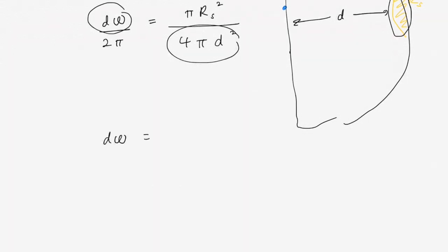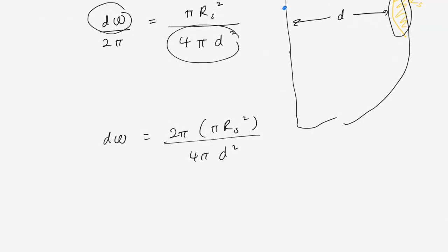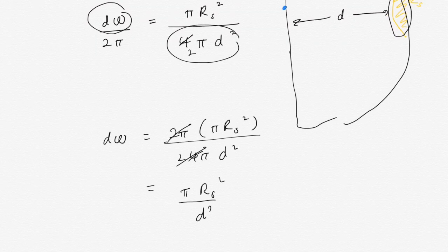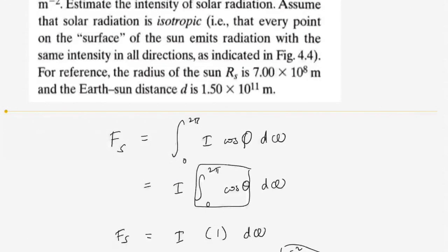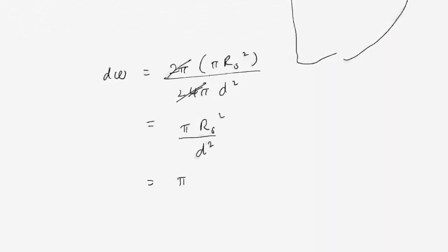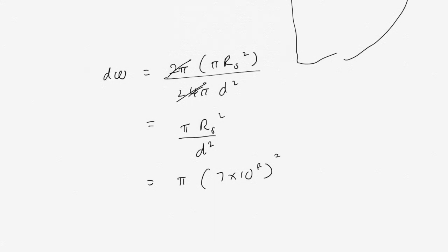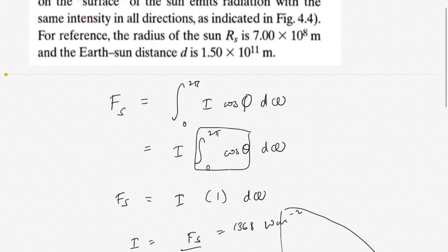We can calculate dΩ by rearranging the equation. Actually, because it's a hemisphere, this factor should be 2 instead of 4 — 4 is for a full sphere. Then we cancel terms, and that leaves us with the expression for dΩ. Now we just substitute the values: RS is 7×10⁸ meters squared over d, which is 1.5×10¹¹ meters.